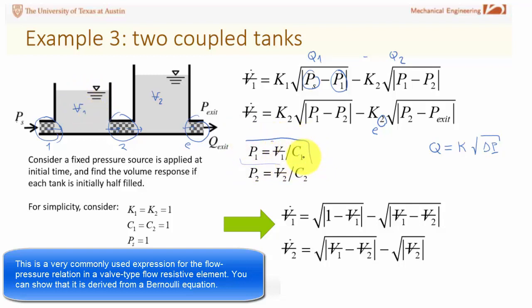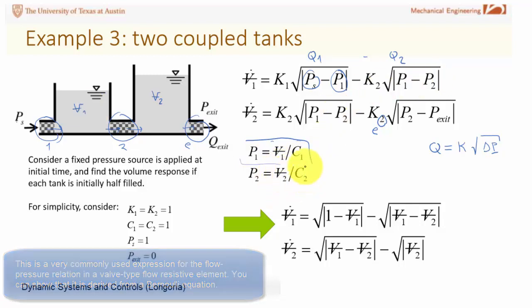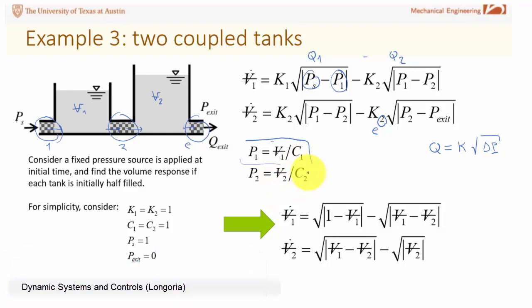For example, PS is the source, P1 for a simple tank is just the volume divided by the capacitance of that tank, and pressure two likewise is the volume in tank two divided by the capacitance C2. I didn't want to go through the trouble of sizing this so I just made everything equal to one, even made the source pressure equal to one. When I do all that I get a nice simple set of equations where I don't have any parameters, makes a little simulation demonstration very easy. I have just volumes on the right hand side which are my states, volume one and volume two.